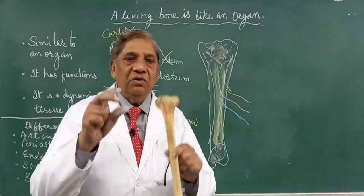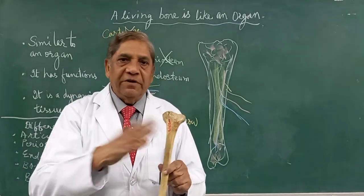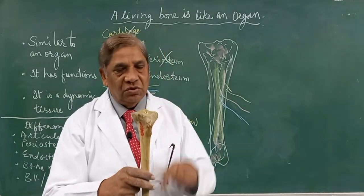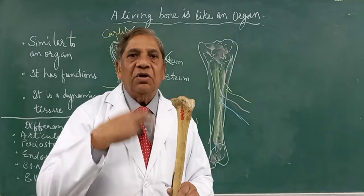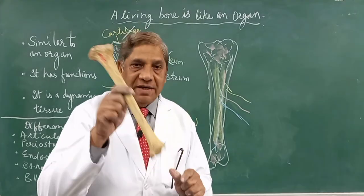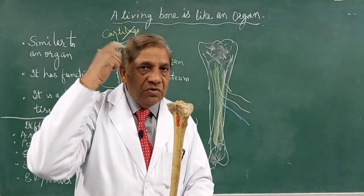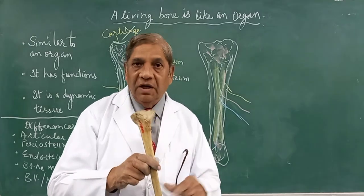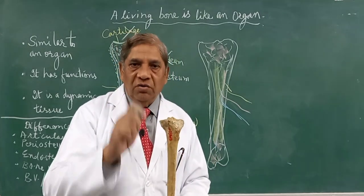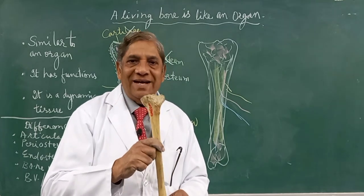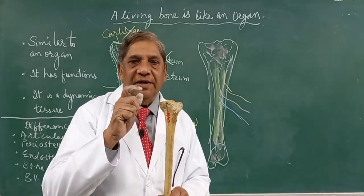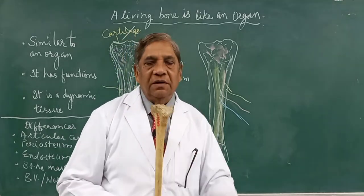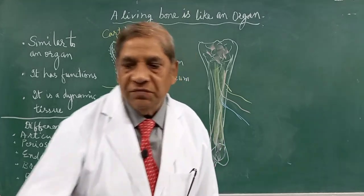So those are the major differences between a dry bone and a living bone. In your mind, always carry the picture of a living bone — one that is covered by periosteum, has a blood supply, a nerve supply, bone marrow, and is a dynamic tissue constantly being destroyed and reformed. A dry bone is entirely different. Always think of a living bone while you are studying, not of a dry bone, even though we use dry bones in the classroom. Thank you very much for watching.